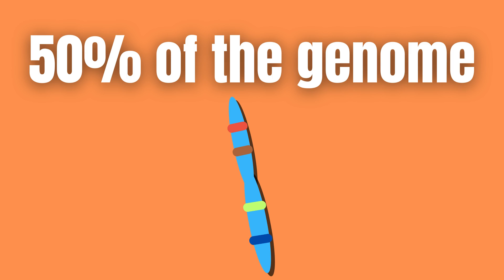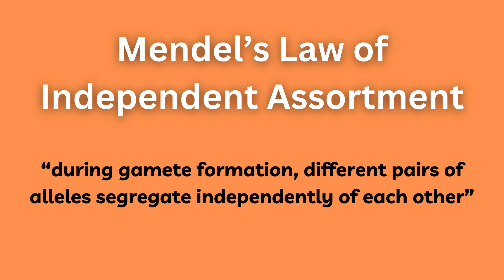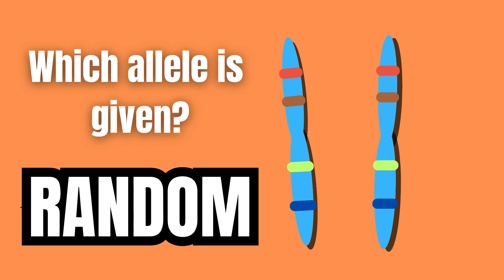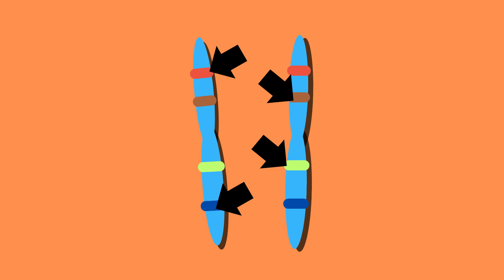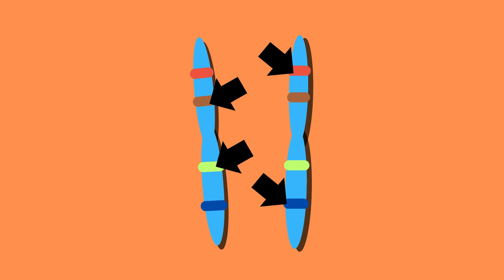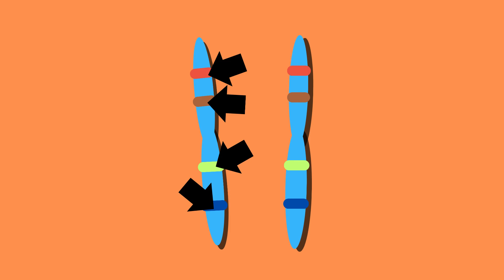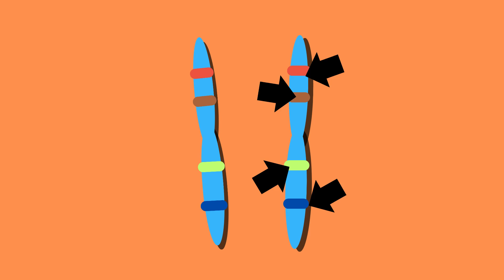What Mendel's law of independent assortment therefore effectively states is that which one of these two alleles is given is entirely random. In addition, the particular allele given in one location does not affect which allele will be given at another location.